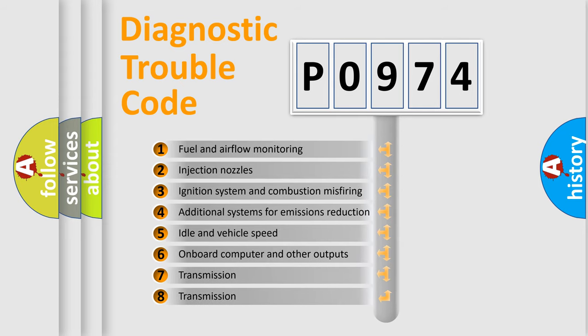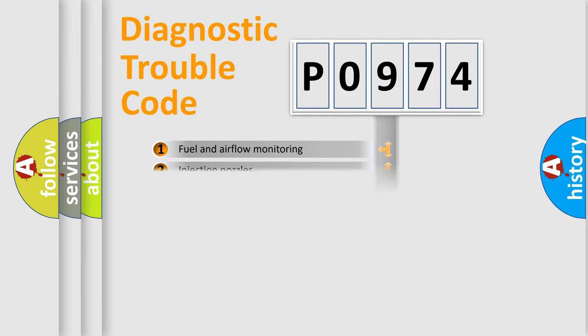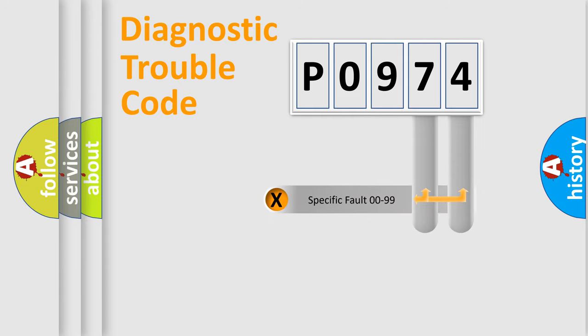The third character specifies a subset of errors. The distribution shown is valid only for the standardized DTC code. Only the last two characters define the specific fault of the group.